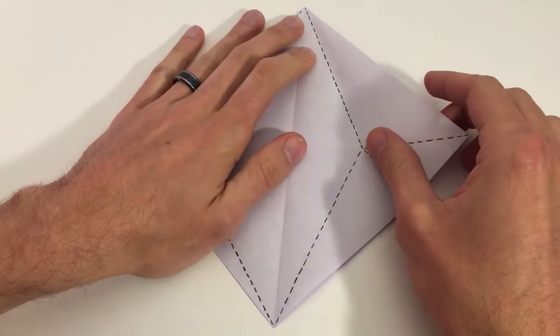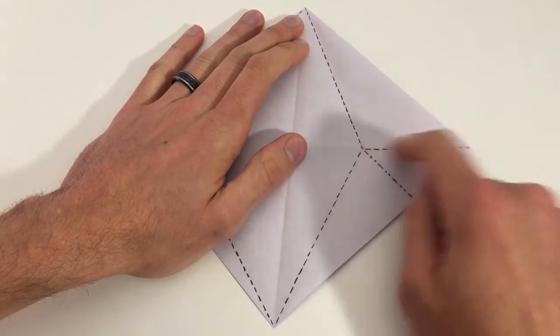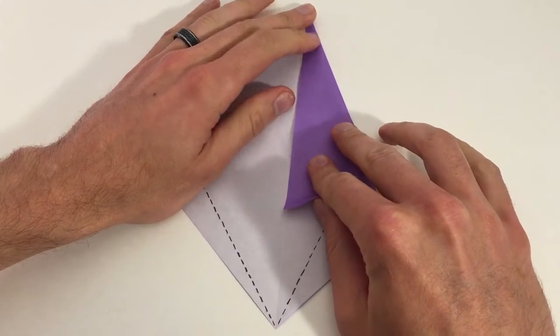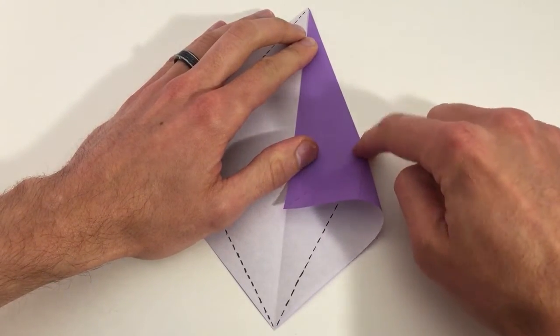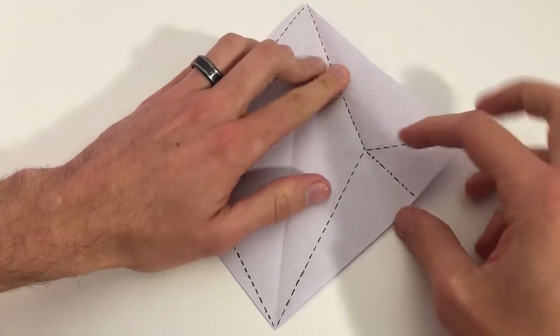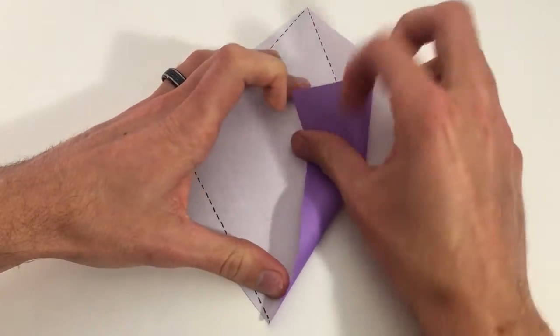That's usually easiest if you start by folding each of the valley folds first. Just fold them all separately. And anytime the folds are along the three angle bisectors of a triangle, they will all meet at a common point.